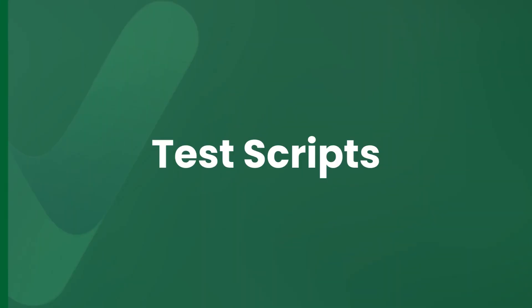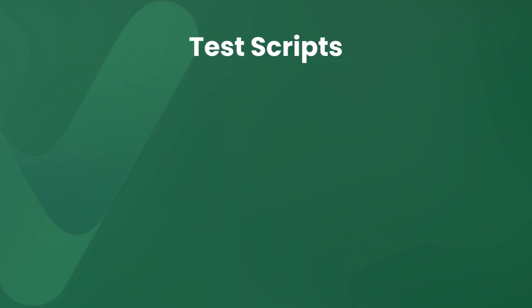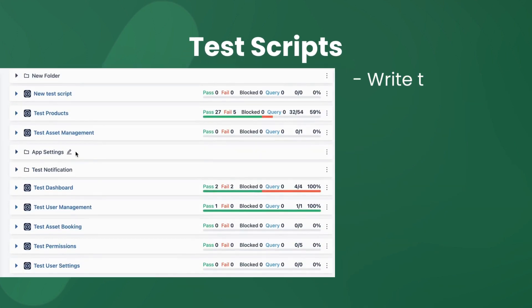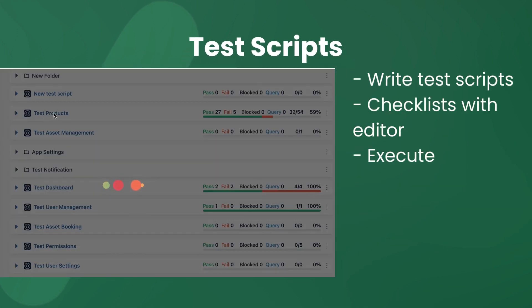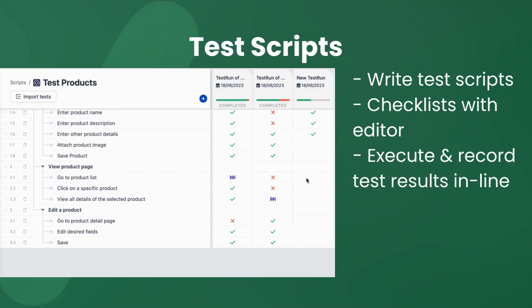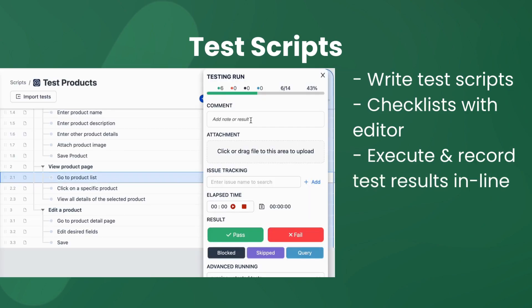The first feature is AgileTestScript. It provides a quick way to write test scripts and checklists with the editor, execute, and record test results in line.